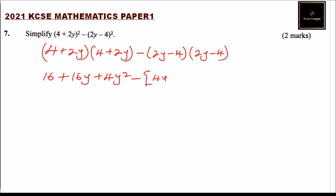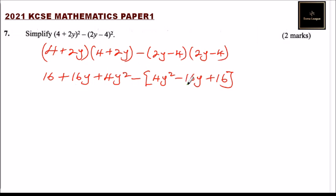Now for the second bracket, we put it in brackets because of the minus sign. 2y multiplied by 2y gives us 4y squared. 2y multiplied by 4 gives us 8y, and minus 4 times 2y gives 8y, so that will be minus 16y. Then minus 4 times 4 gives positive 16. When we open the bracket with the minus sign, some signs will change to negative.